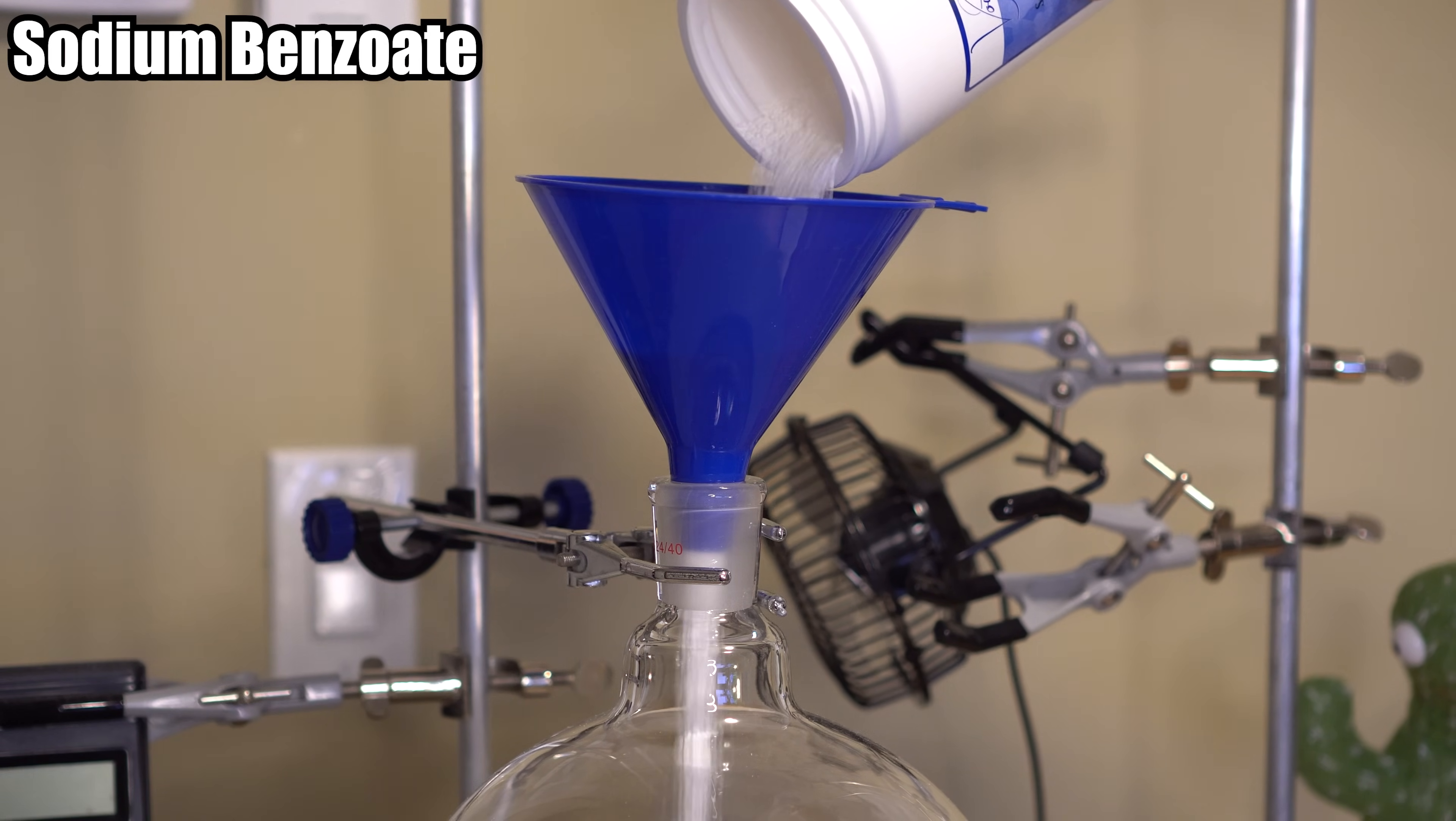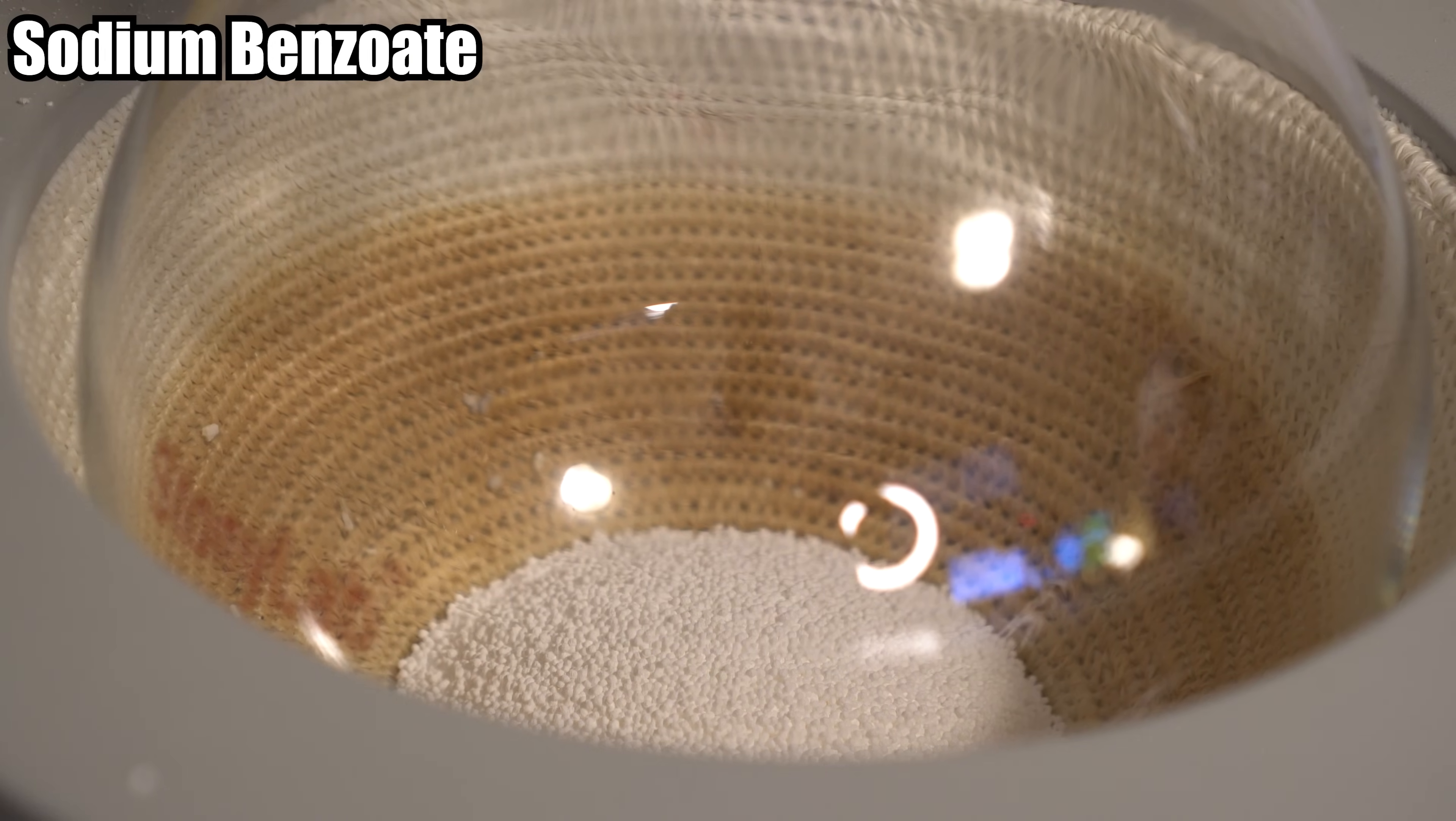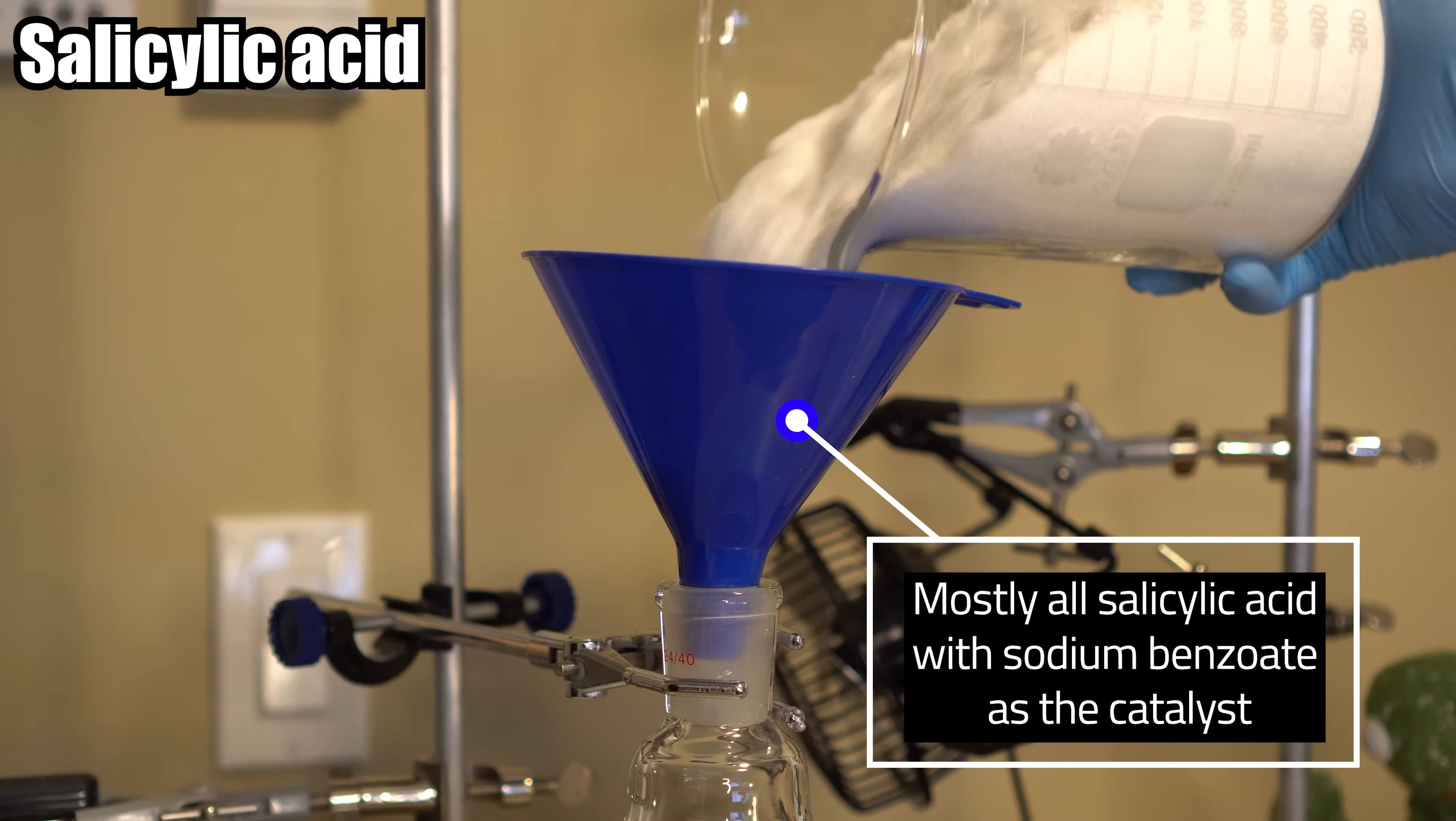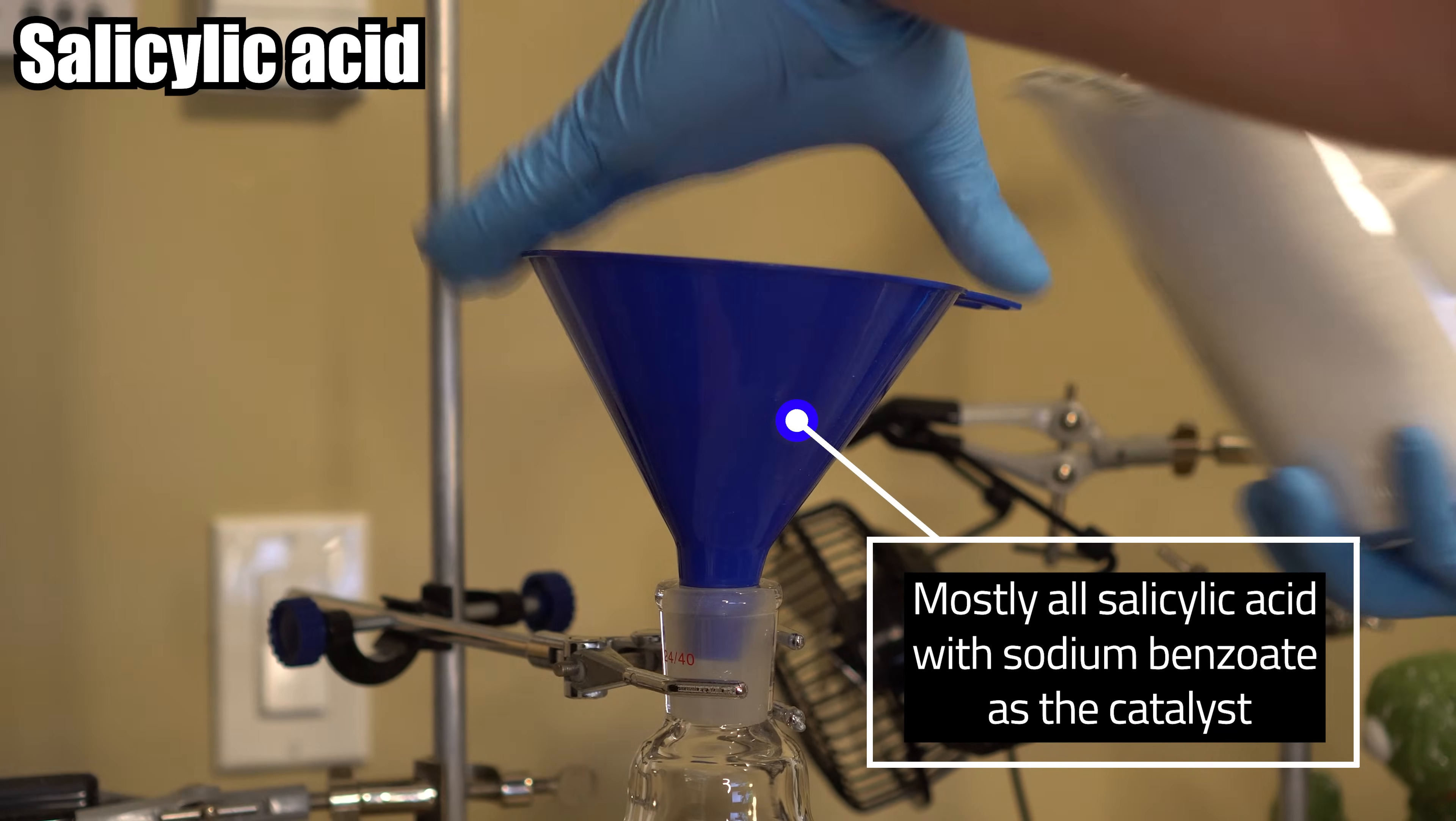He started off by pouring sodium benzoate into a 5 liter round bottom boiling flask as the catalyst. He took a big bag of suspicious white powder, which he said was salicylic acid, and he put that into the 5 liter as well.